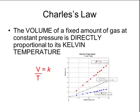Charles's law can be described mathematically by saying volume divided by temperature equals some constant value, or V over T.